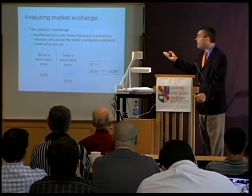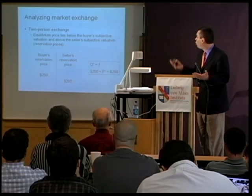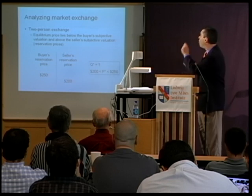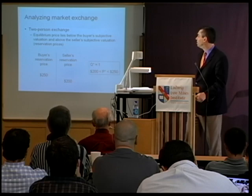They could exchange the radio at any price between $200 and $250 — greater than $200, less than $250 — and each would be better off. The equilibrium price could lie anywhere below the buyer's subjective valuation and above the seller's subjective valuation. We can't explain exactly what the price will be — whether $225, $201, or $249 — it depends on the relative bargaining abilities of the two parties. The most we can say is that the price will lie somewhere in this interval.